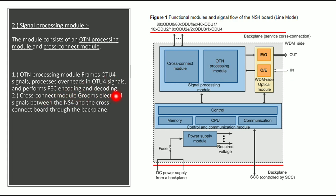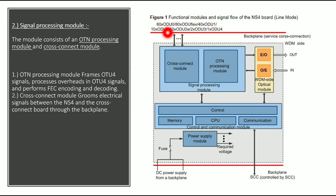The cross connect module grooms electrical signals between the NS4 and the cross connect board via the backplane. It receives a number of electrical signals and then converts them into a single electrical flow — this is called electrical grooming.